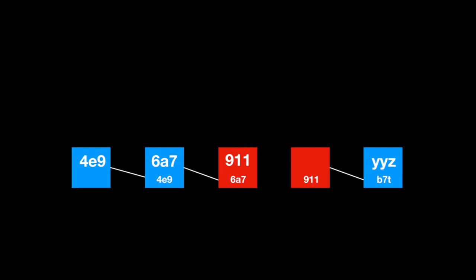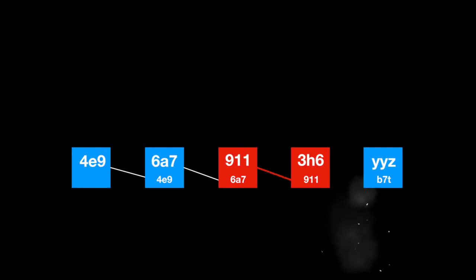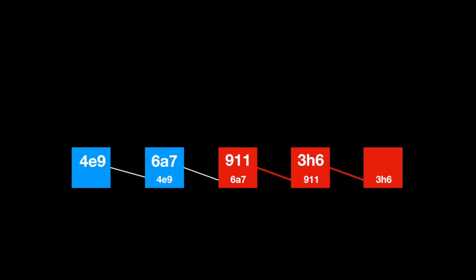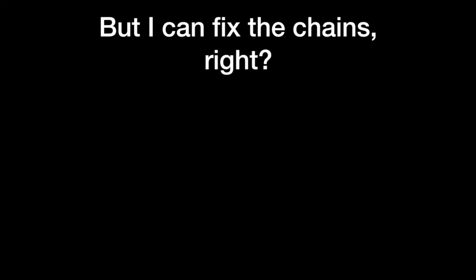So now the reference is changed correctly to 911, which refers correctly to the third block. However, the fact that this data is changed causes the fourth block to have a whole new hash code, 3H6. Now as you can see, the fifth block no longer references the fourth block correctly, and so the chain breaks. And we now fix it again and fix the chain. However, as you can see here, in order to change data in the third block, the third, fourth, and fifth blocks were also changed.